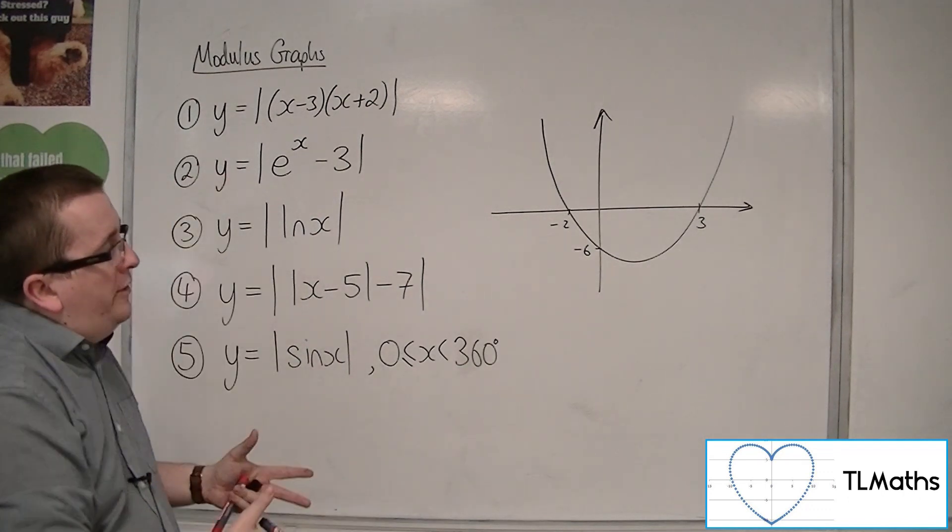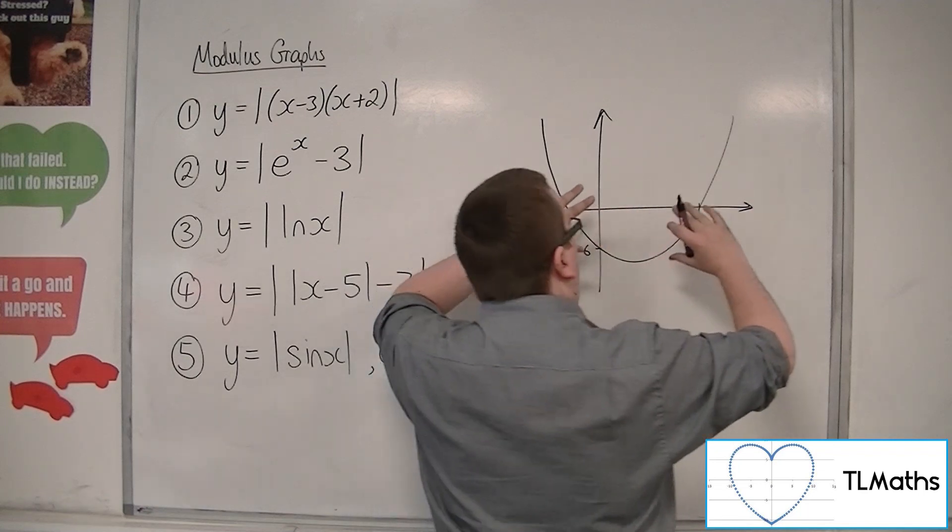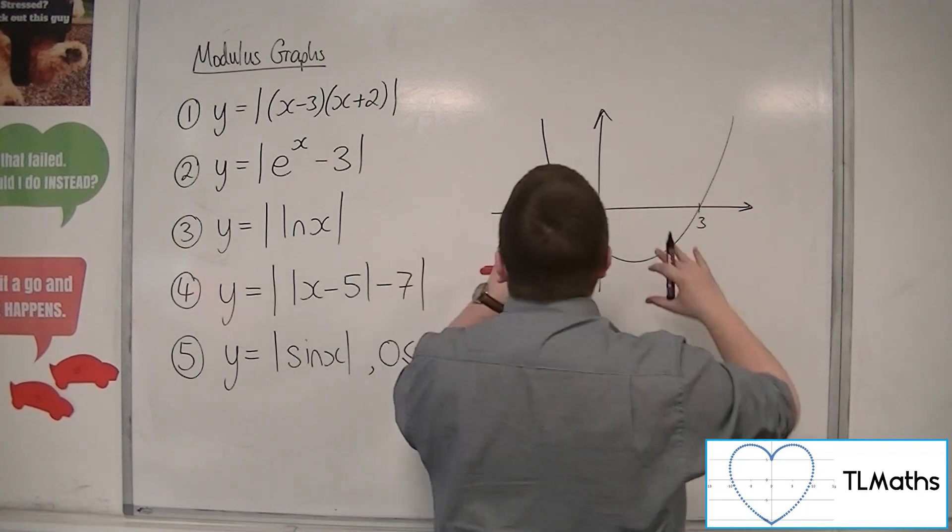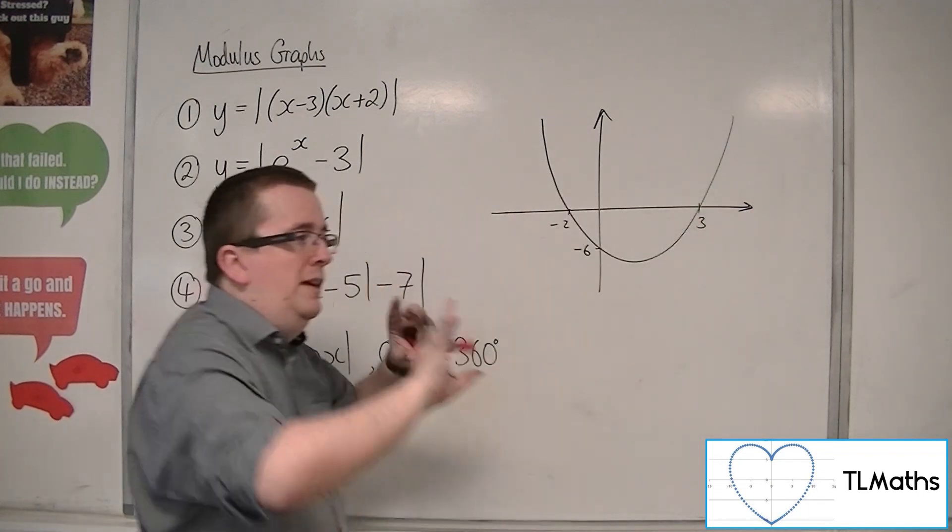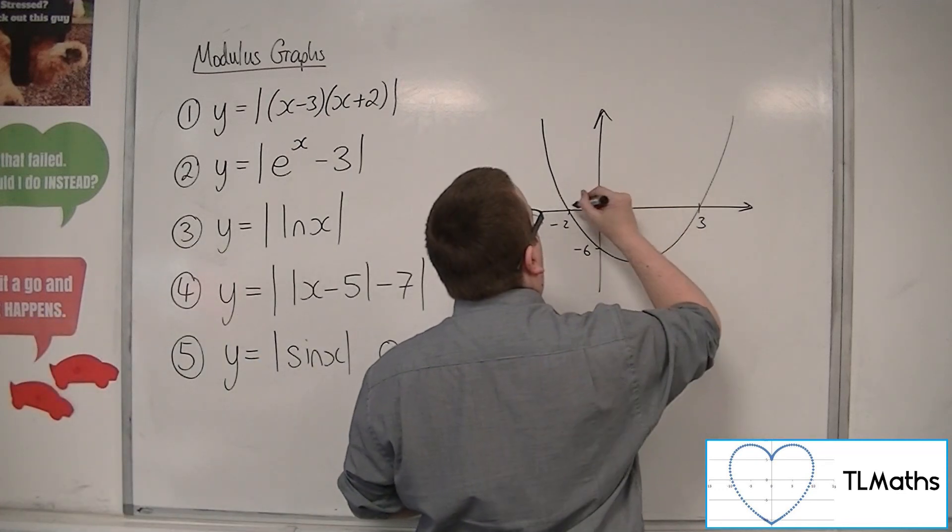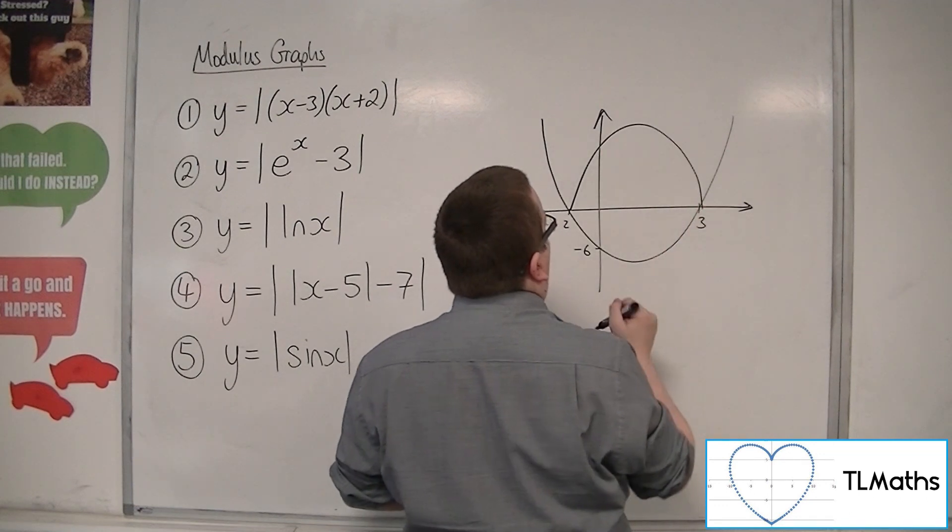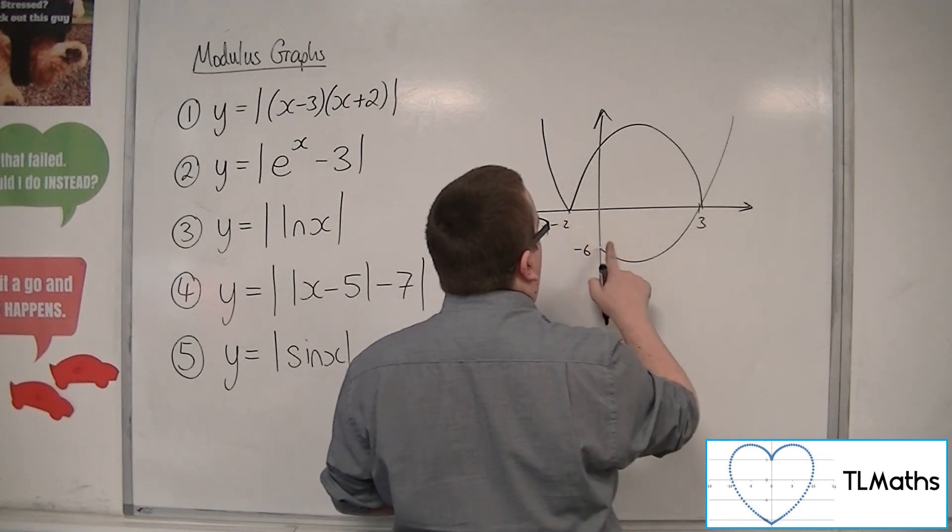The moment you pop modulus signs around it, what happens is that the portion of the graph that's below the x-axis, because you can't have negative values anymore, it gets reflected up in the x-axis. It's much the same way as we first met those other graphs, the linear graphs. So really it should look like this.